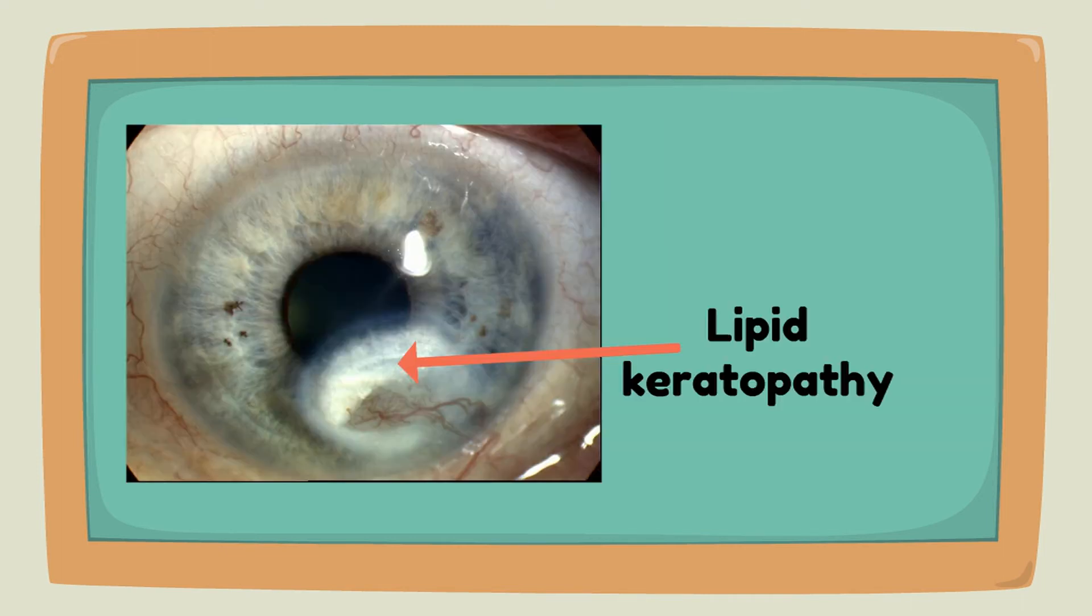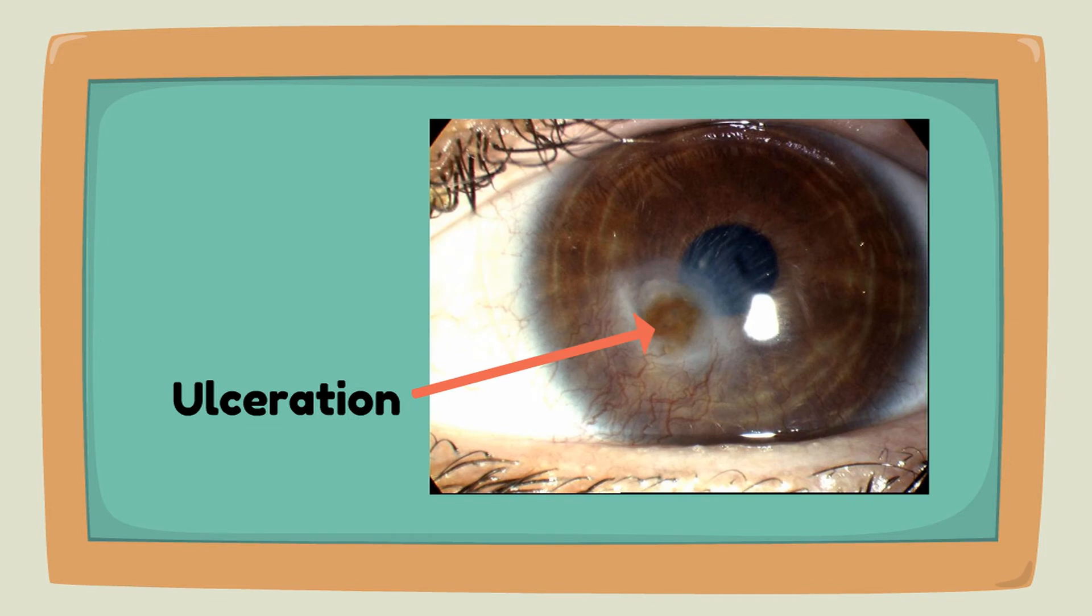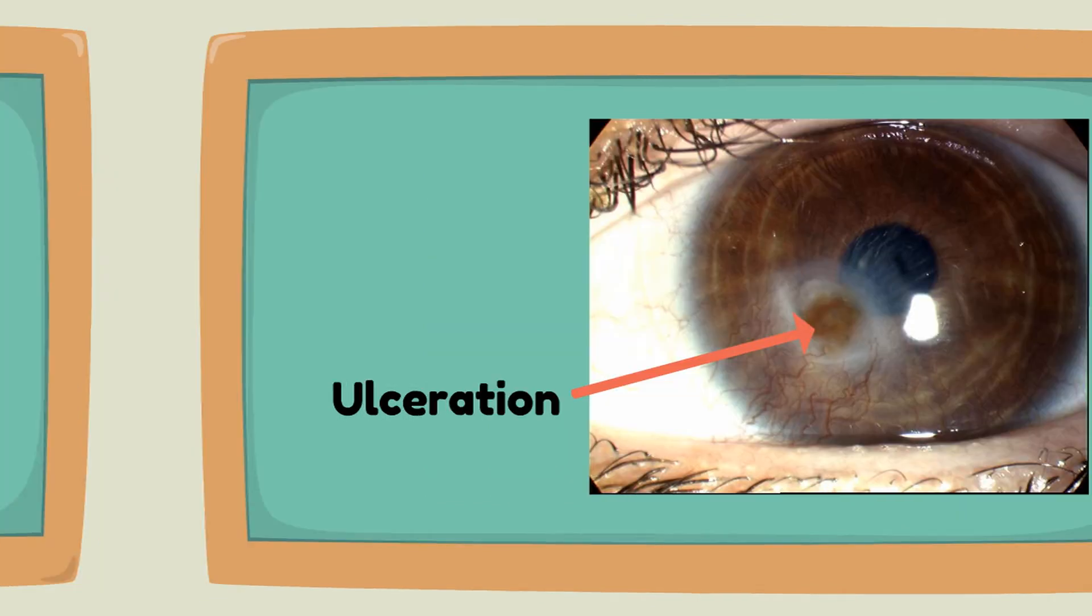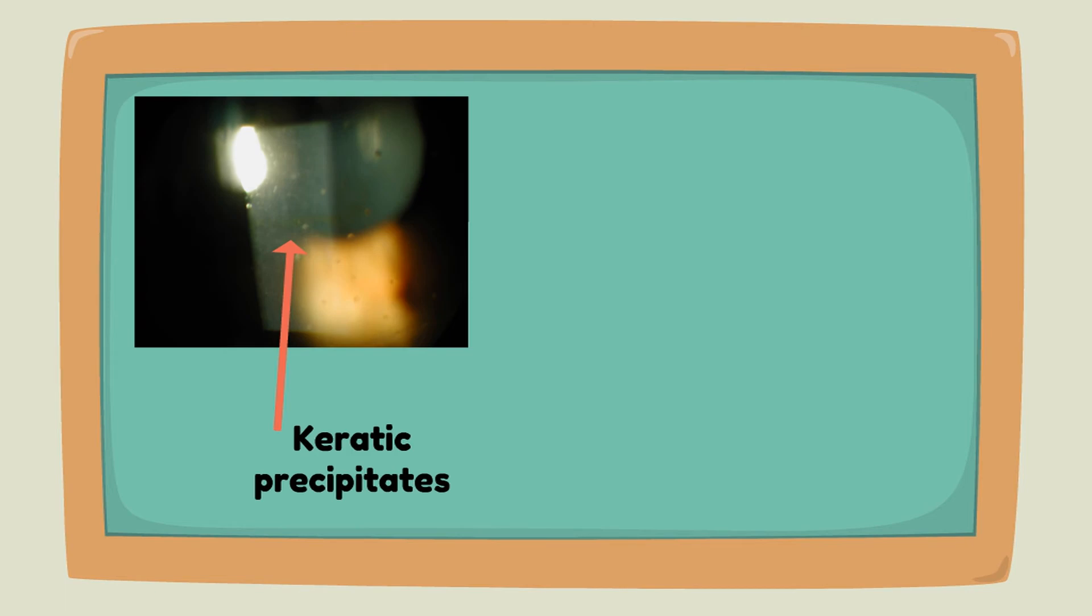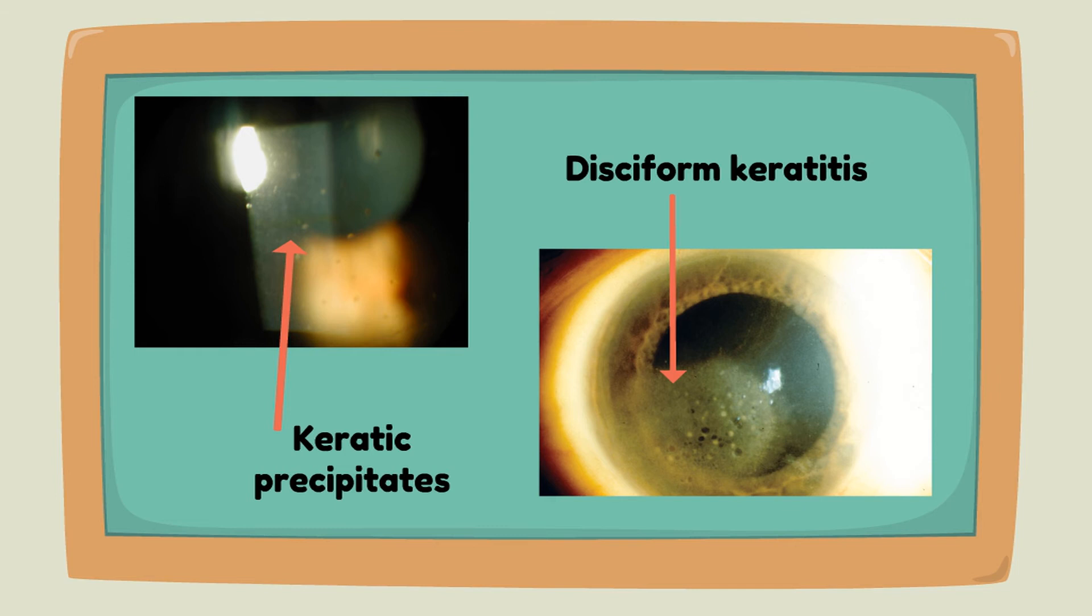In endothelial keratitis, there are keratic precipitates that may lead to corneal edema, typically in a disc shape, which is known as disciform keratitis.